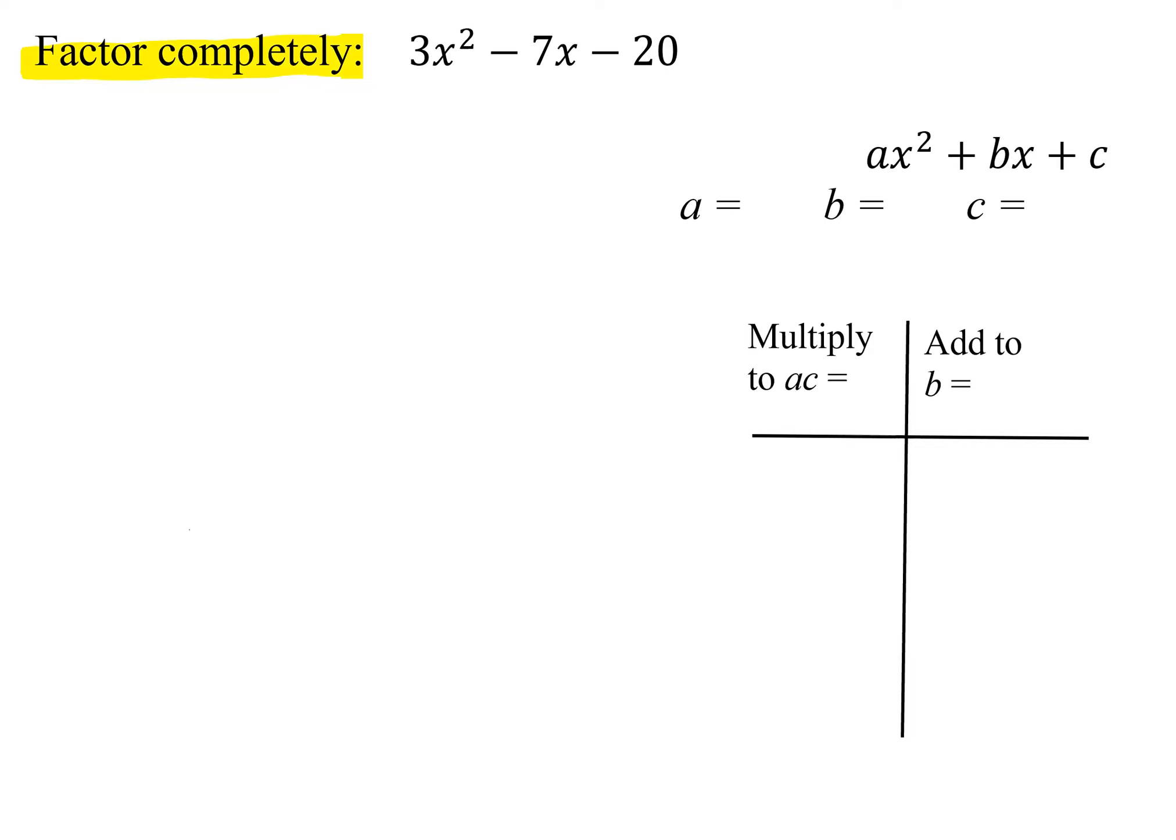In this problem, we're asked to factor completely 3x squared minus 7x minus 20.